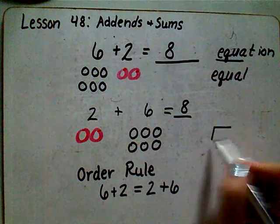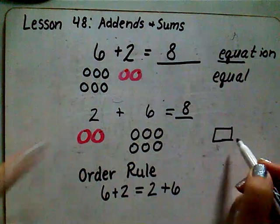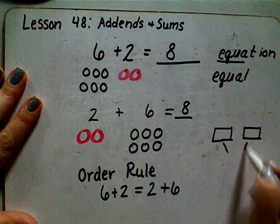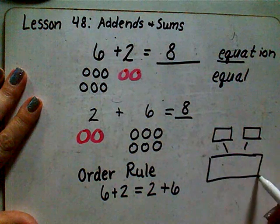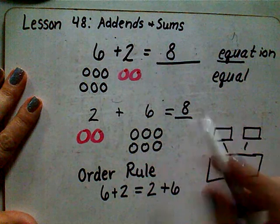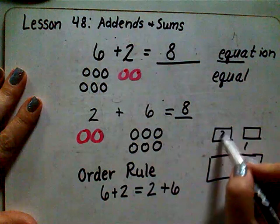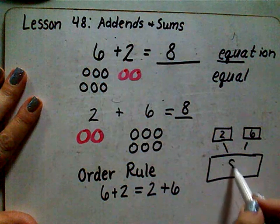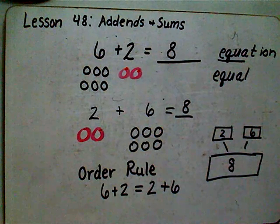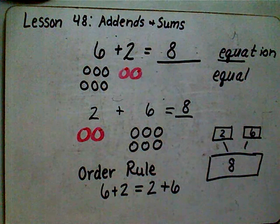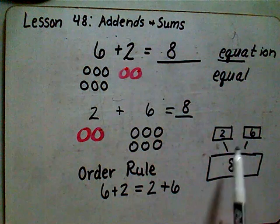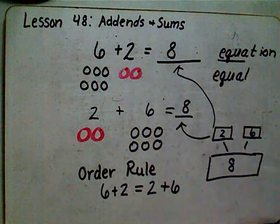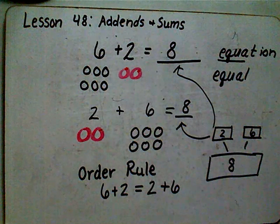If we look at our part-part-whole model that goes along with these equations, our parts would be two and six, and our whole would be eight. Using this part-part-whole model, there are two different equations we can write to go along with it.